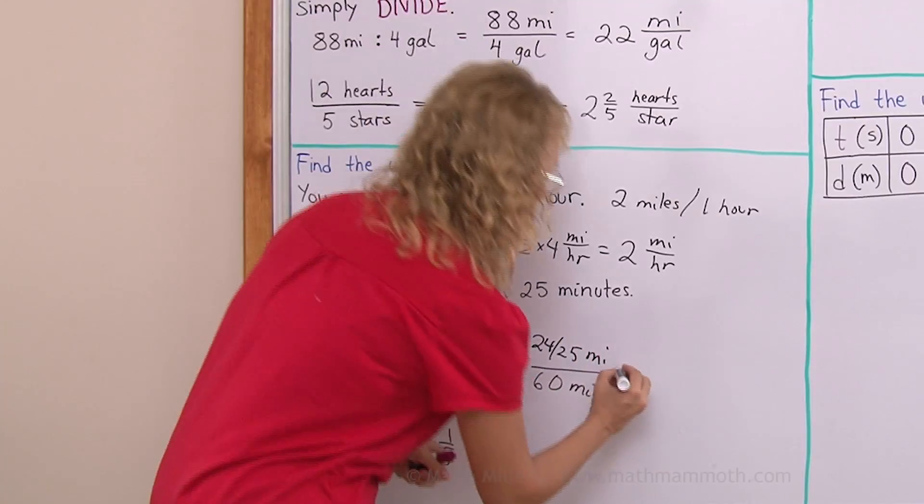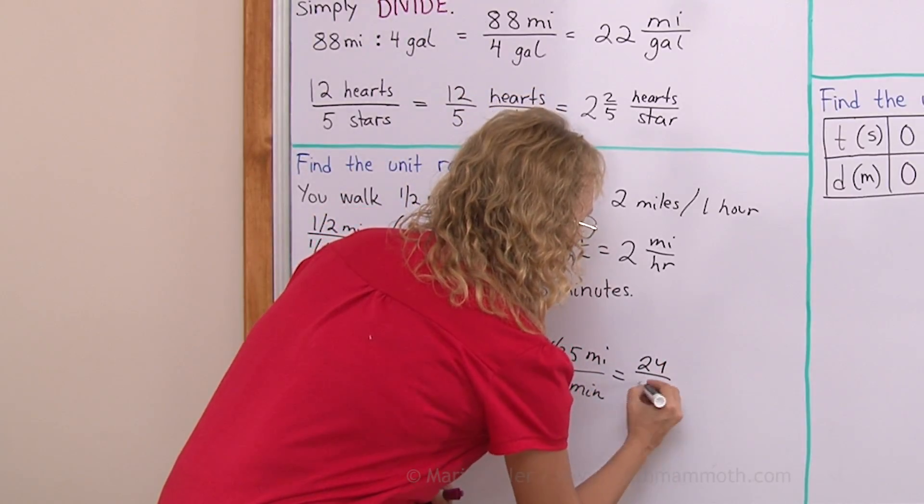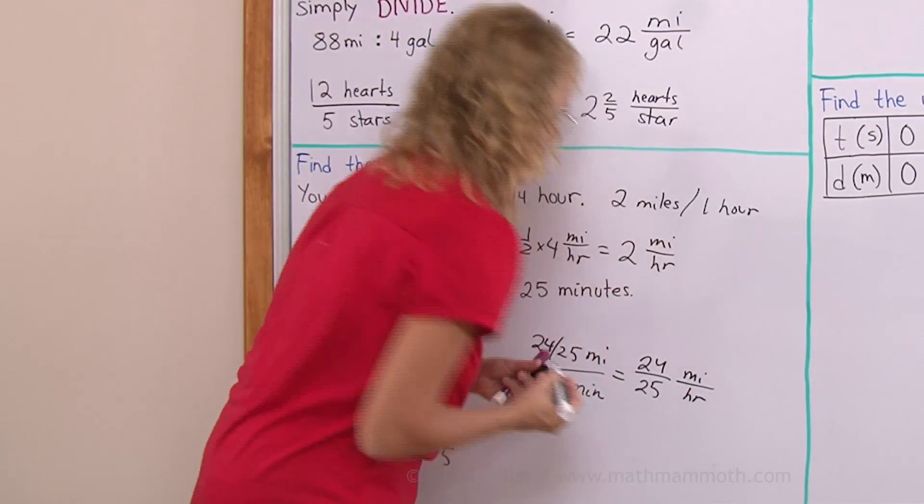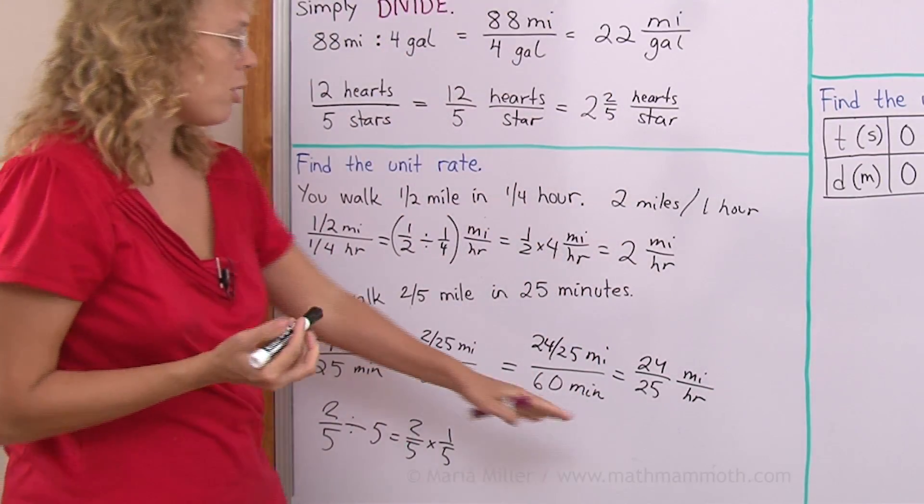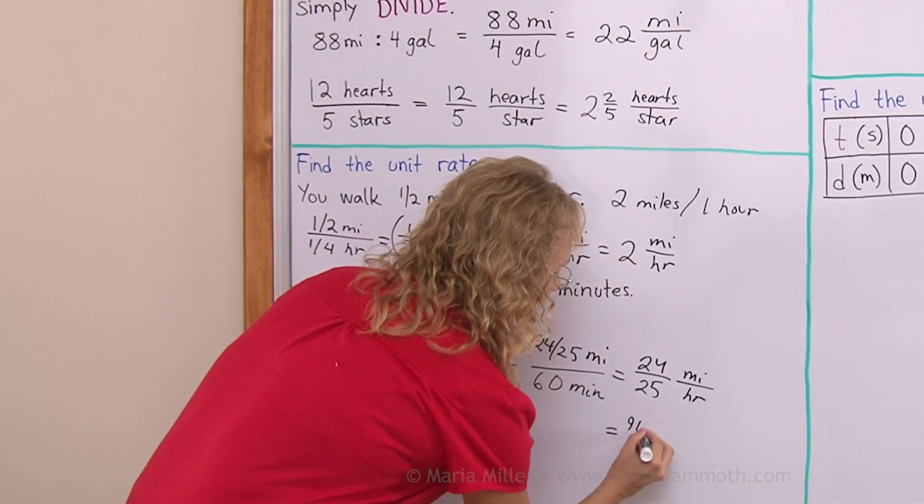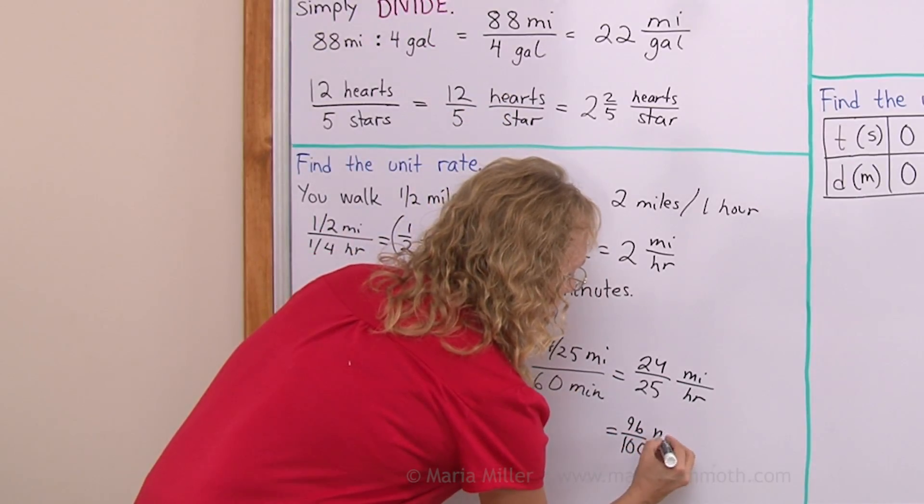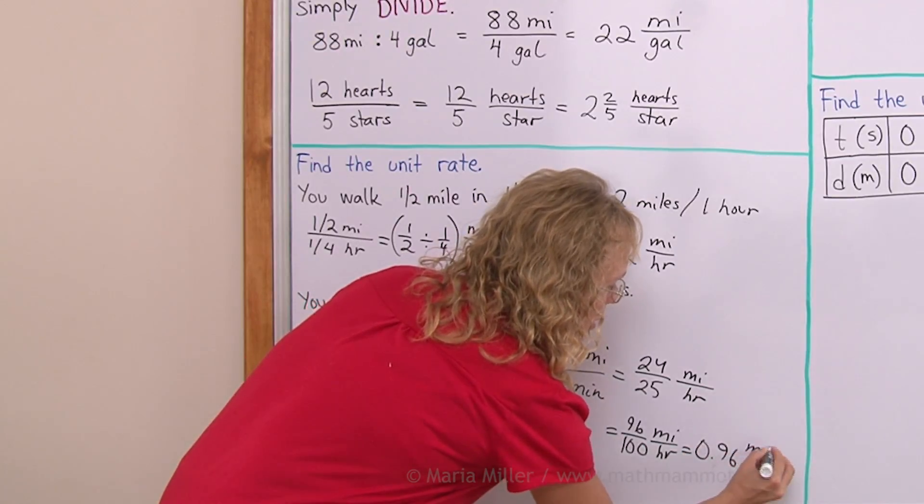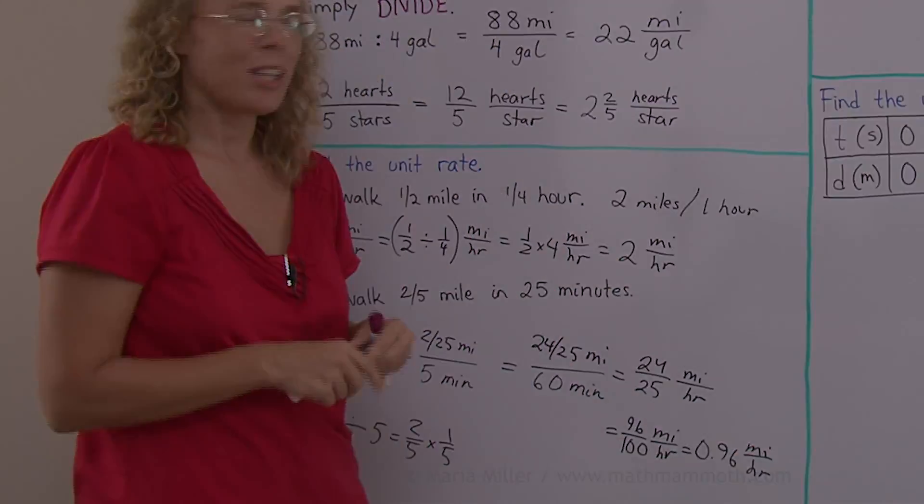So we get 24 over 25 miles per hour. You could also maybe write this as a decimal. This would be the same as 96 over 100 miles per hour, which is 0.96 miles per hour, almost one mile per hour. Slow walking.